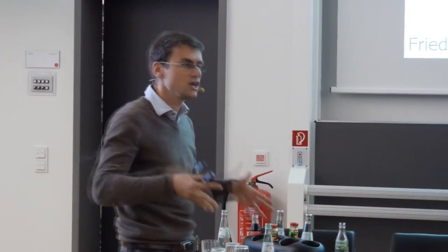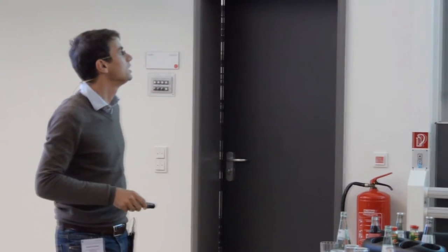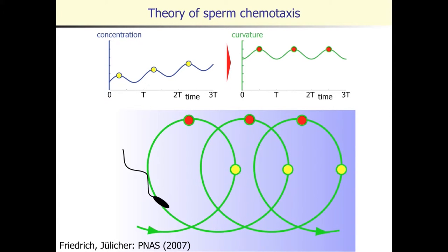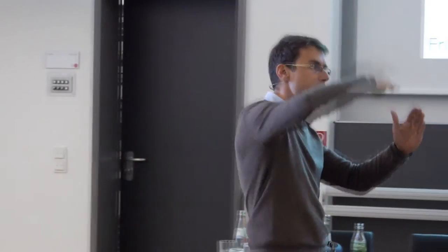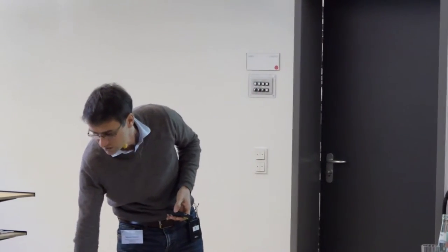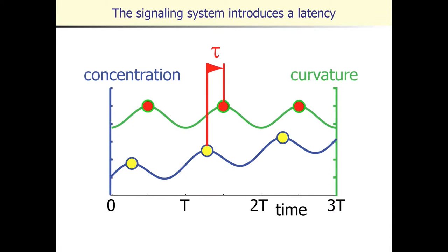These are the same drifting circles that Lewis showed in his talk. I have plotted the positions where the curvature signal attains a local maximum, and you see there is a phase lag between a maximum of the concentration signal and a maximum of the path curvature. This represents a latency of the signaling system, which is important for steering. In this particular example it is one quarter of the beat period of circular swimming.